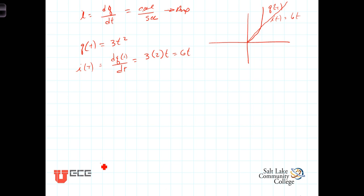All righty, now, what if we had I of t given to us, that I of t was a constant 5 Coulombs per second, or 5 amps.